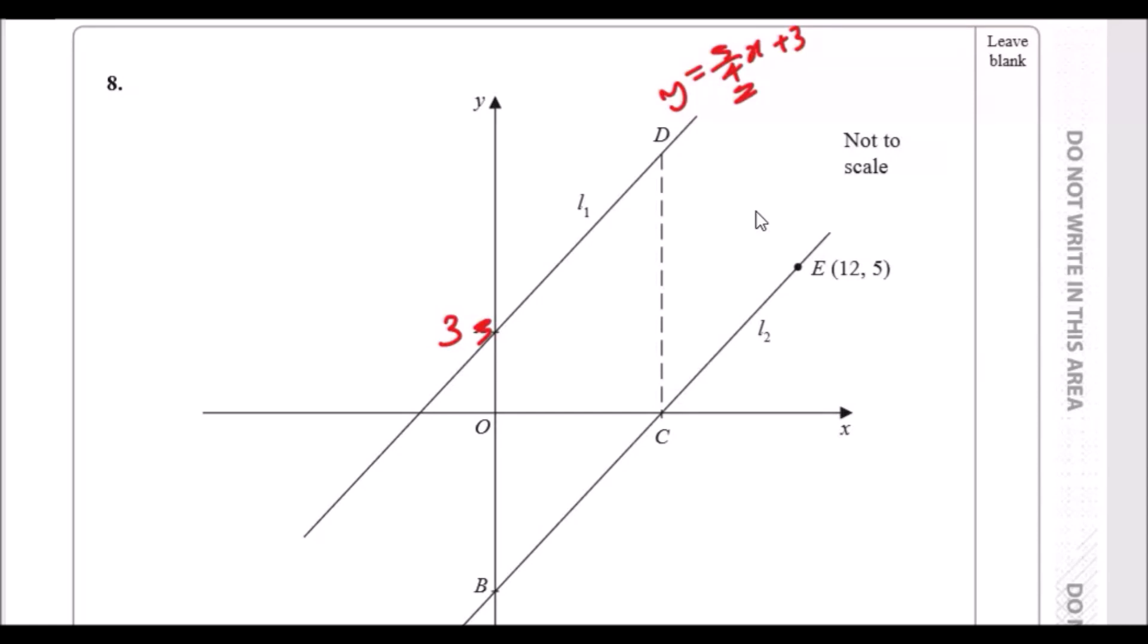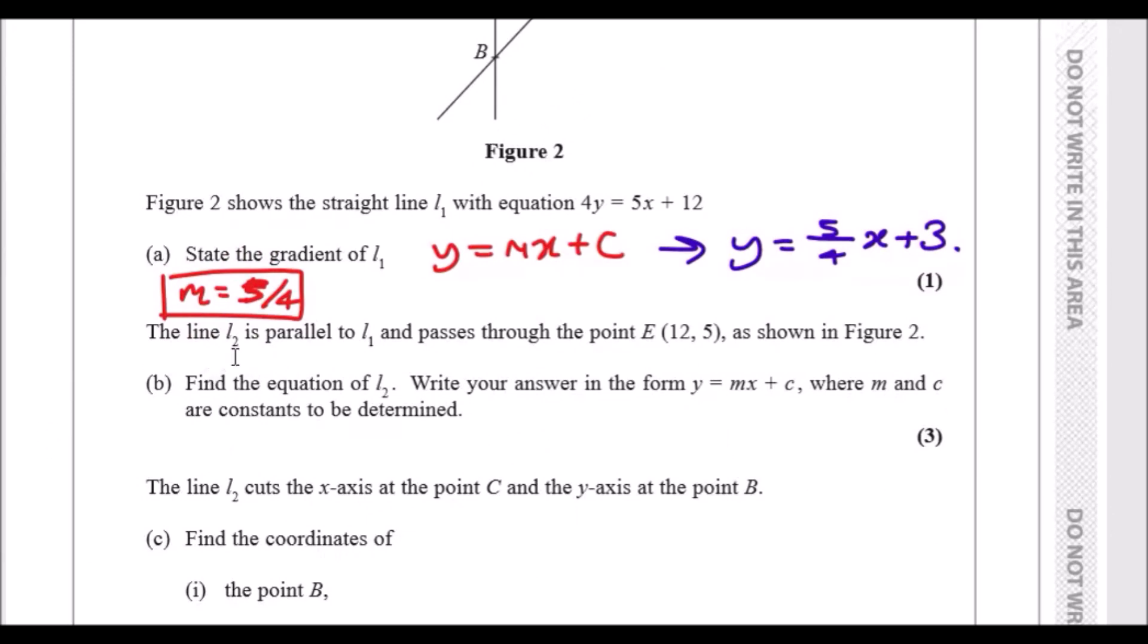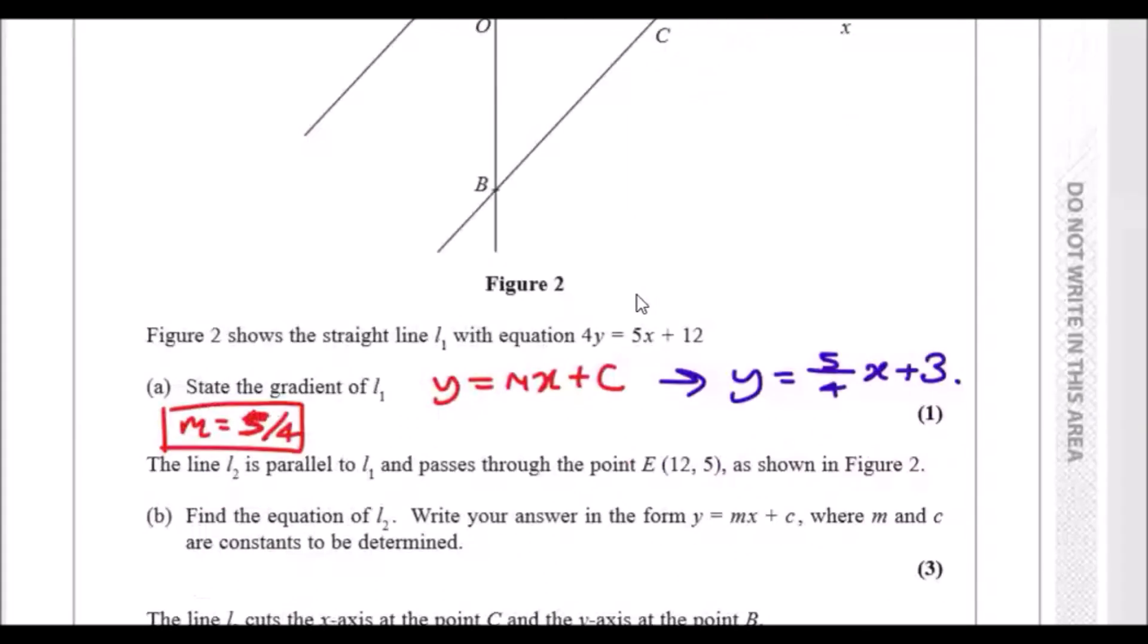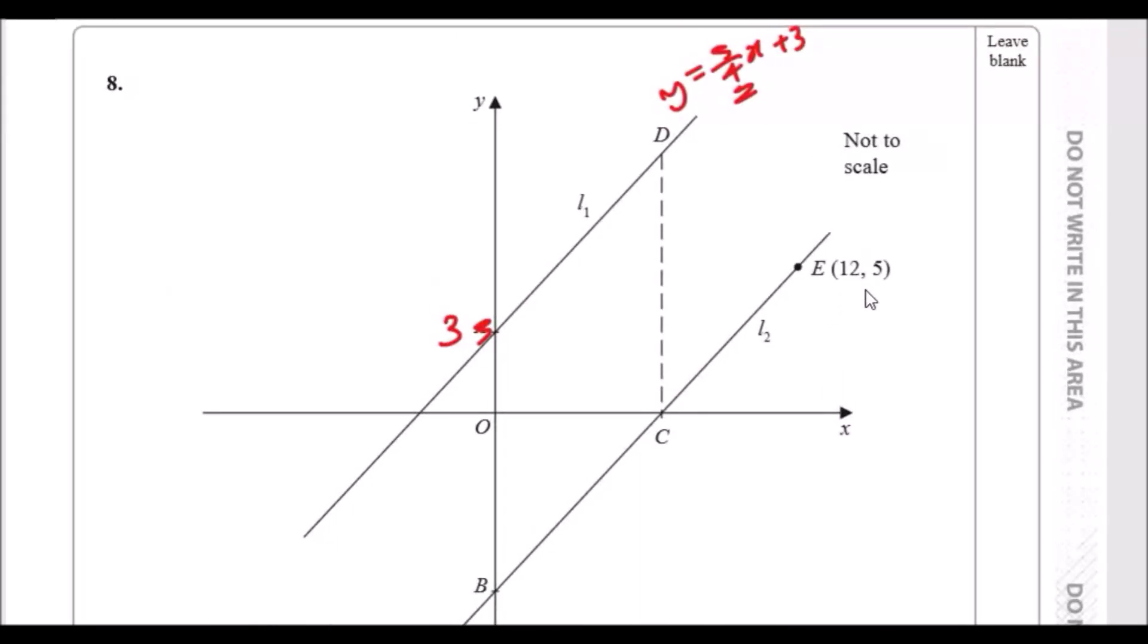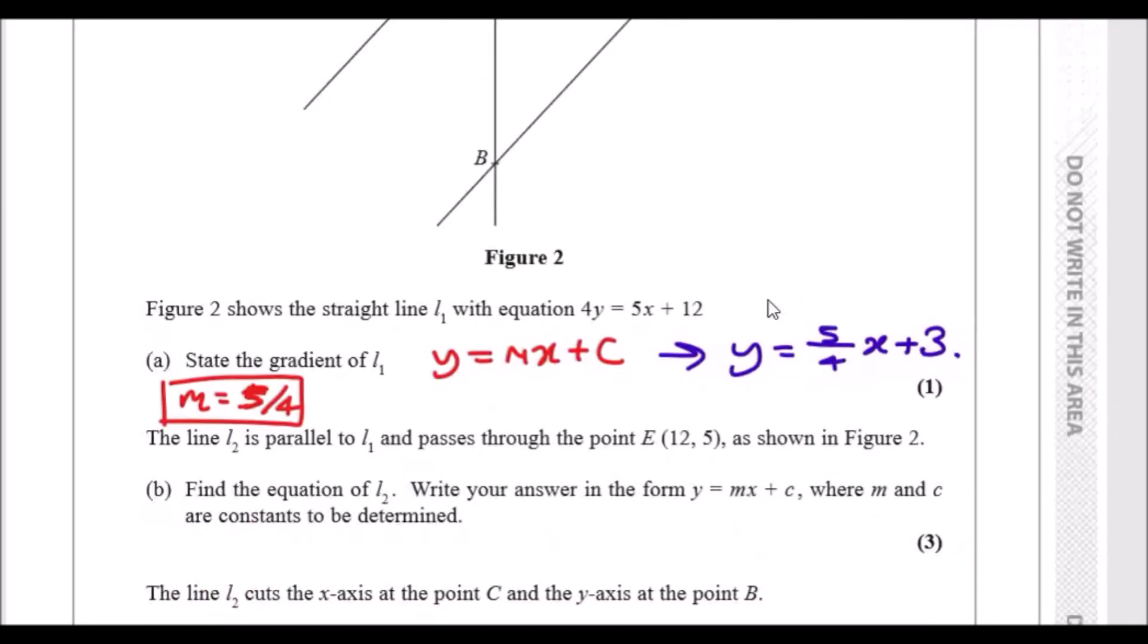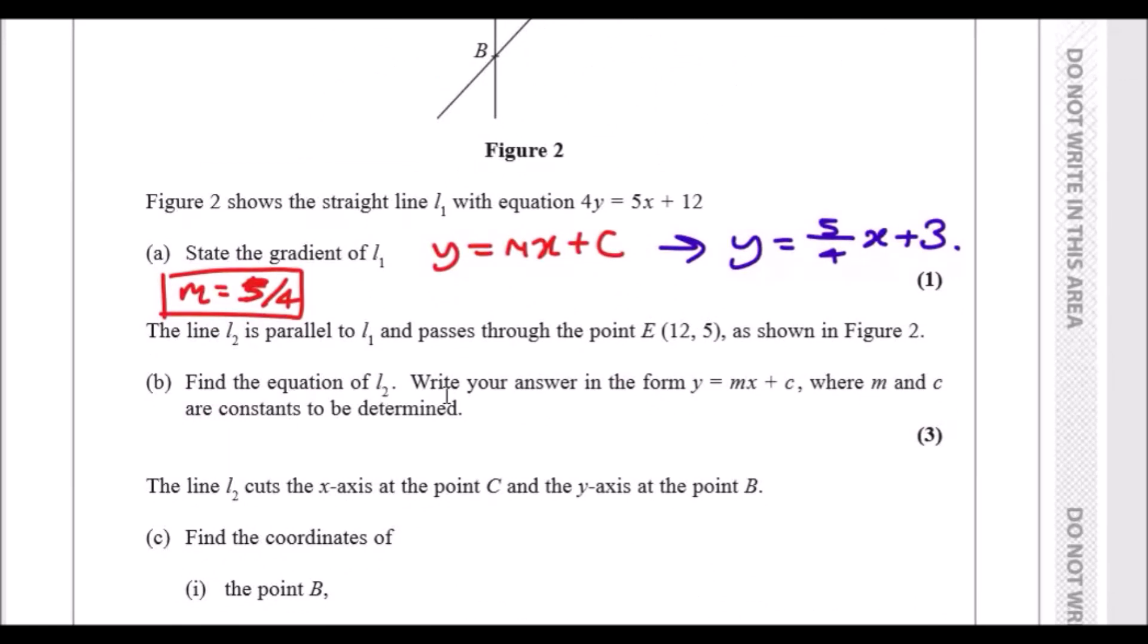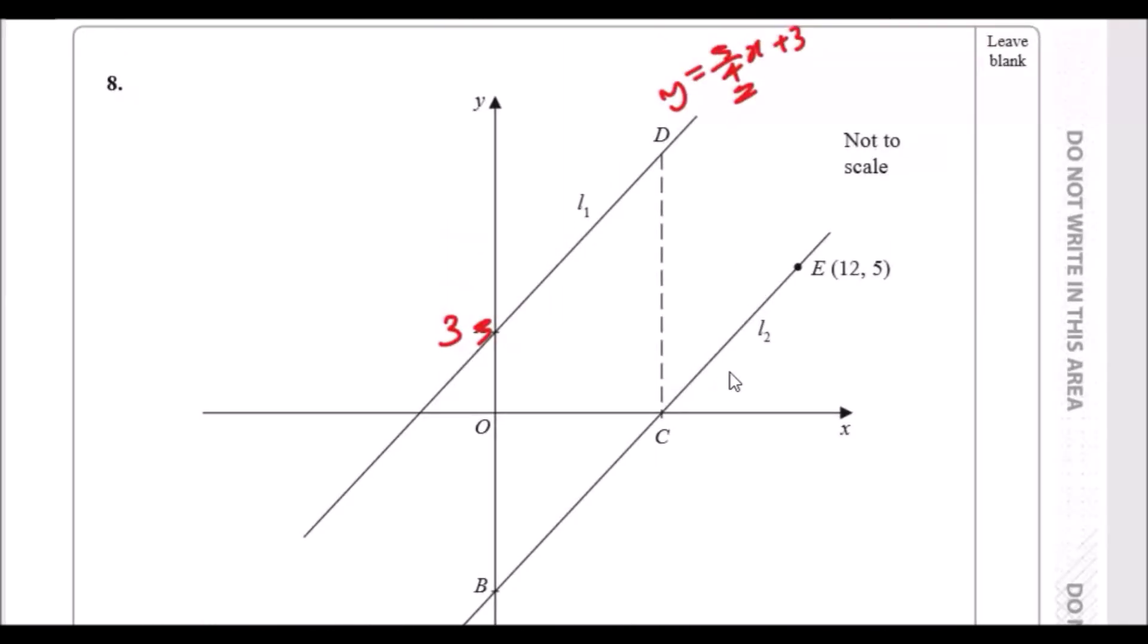Next part: the line L2 is parallel to L1 and passes through the point E(12, 5). Since we know this is parallel, we're going to have the same equation except instead of plus 3, we're going to call it plus c and find out what the y-intercept is. Find the equation of L2 and write your answer in the form y = mx + c. Easy. So let's go ahead and jump straight to the point.